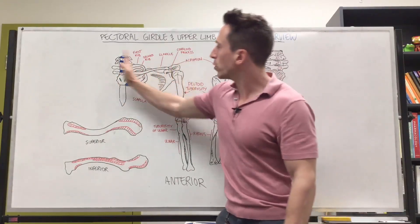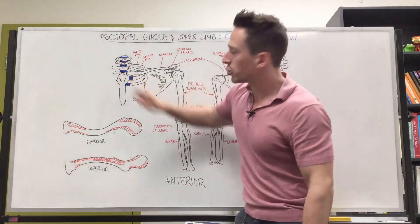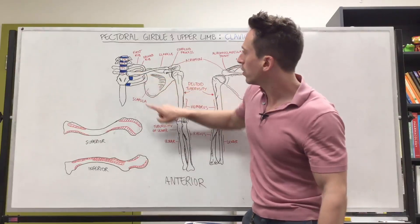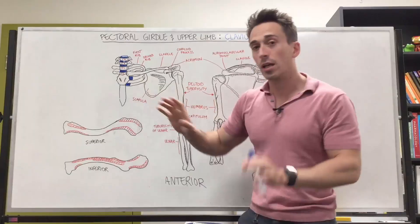Medially, so that means towards the midline, the clavicle articulates. That means it speaks to another bone at the sternum. So the clavicle talks to the sternum, comes together. That's called the sternoclavicular joint.